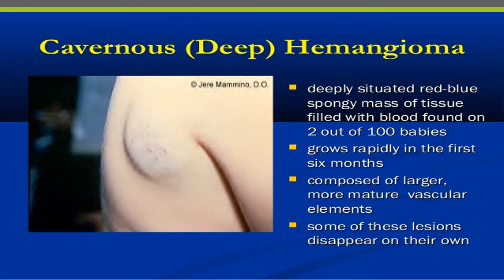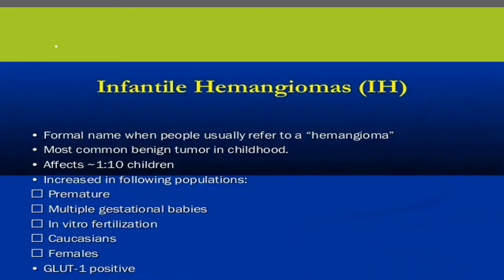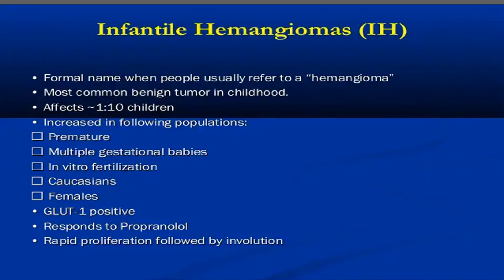Cavernous or deep hemangioma is a deeply situated red-blue spongy mass of tissue filled with blood, found in two out of 100 babies. It grows rapidly in the first six months and is composed of larger, more mature vascular elements. Some of these lesions disappear on their own.